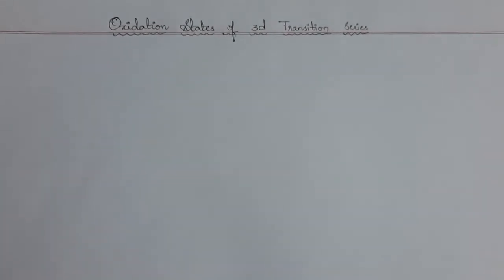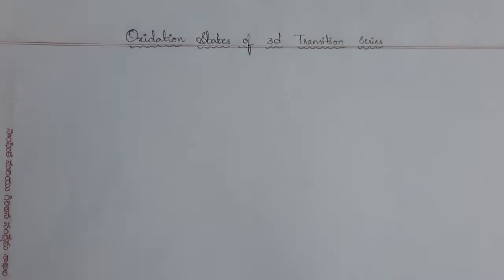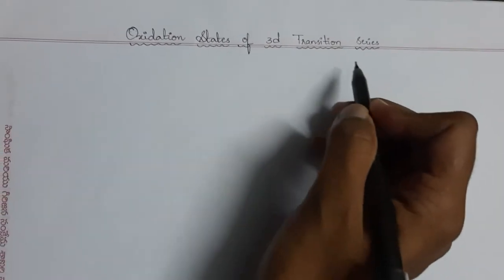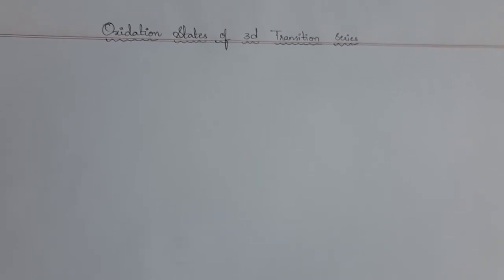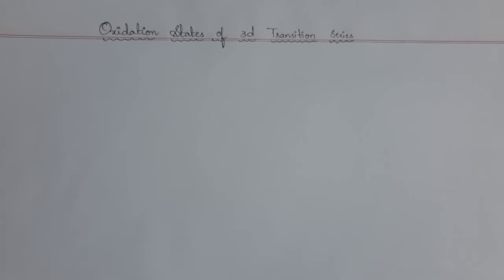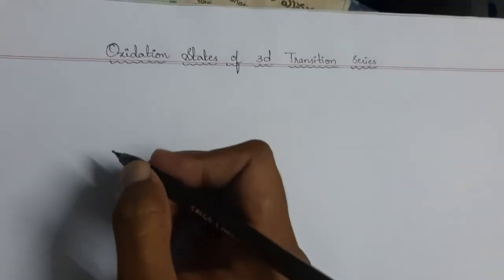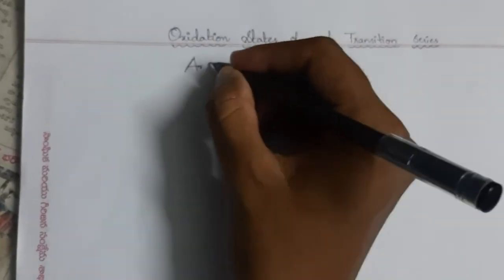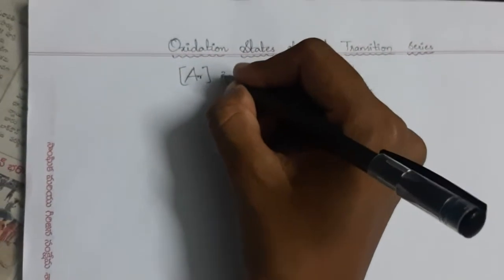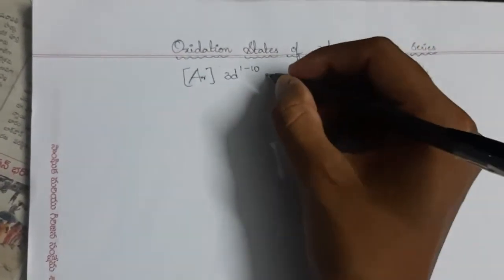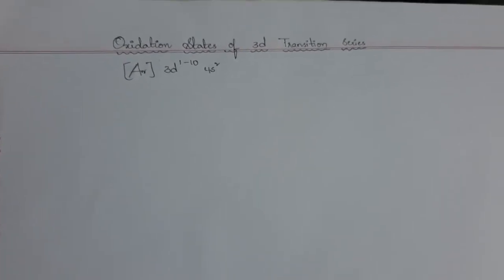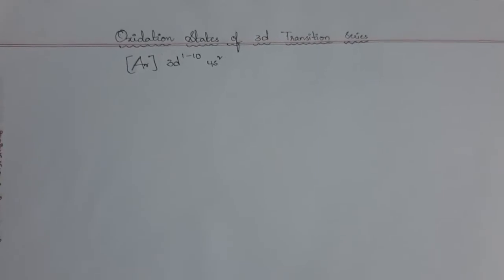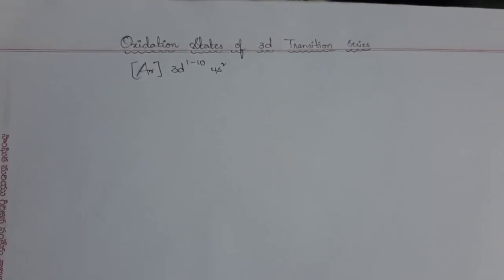Hello everyone, welcome to my channel. In this video we are going to discuss the oxidation states of the 3d transition series. We know that d-block elements contain four series: 3d, 4d, 5d, and 6d. We are going to discuss the first series — the 3d transition series. The general electronic configuration of the 3d series is 3d¹⁻¹⁰ 4s². We can know the oxidation state of a particular element from its electronic configuration.